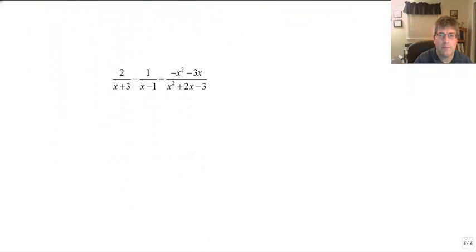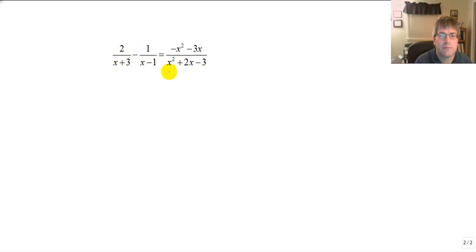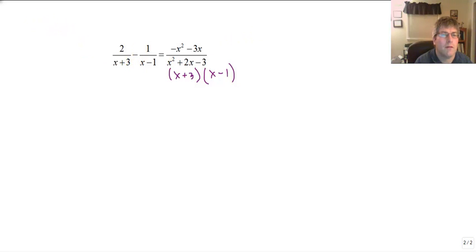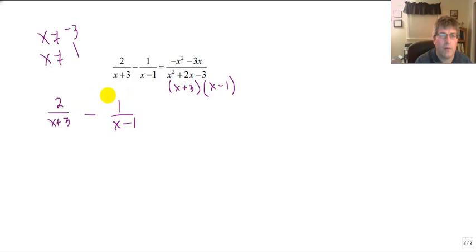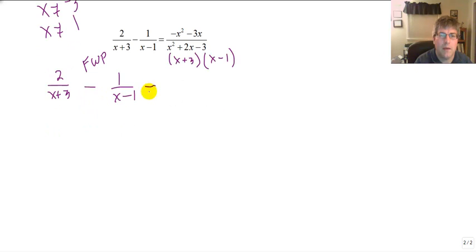Let's go on to our final sample problem. Factoring: x²+2x-3 needs factors of negative 3 that add to positive 2, which is 3 and 1, giving (x+3)(x-1). So the common denominator is (x+3)(x-1). Therefore x cannot be negative 3 and x cannot be positive 1. The problem is: 2 over (x+3) minus 1 over (x-1) equals negative x²minus 3x all over (x+3)(x-1). That minus sign is fraught with peril.